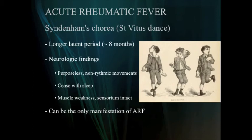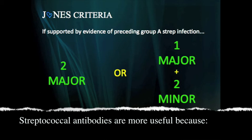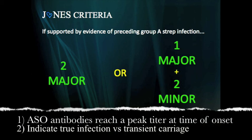Sydenham's chorea, also known as St. Vitus dance, is the neurologic sequelae. By the time people present with rheumatic fever, throat cultures are negative 75% of the time. But streptococcal antibodies are more useful at that point because they reach their peak titer level then, and they also indicate a true infection versus just a transient carriage.